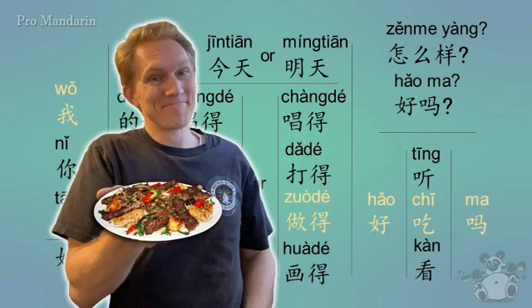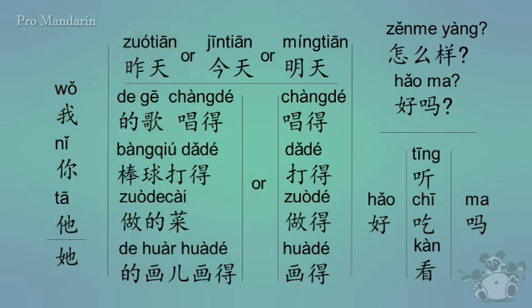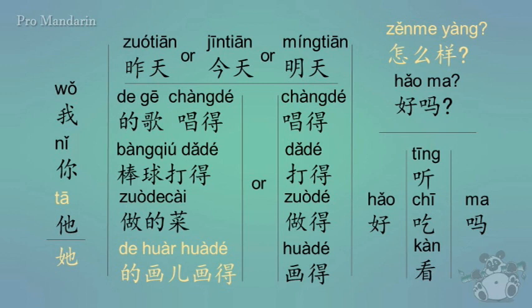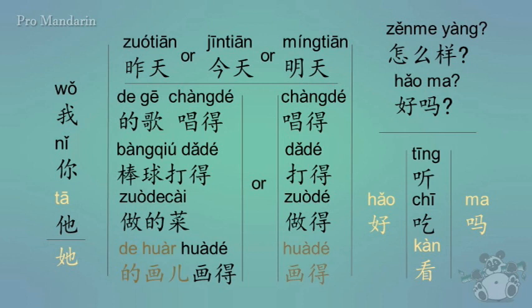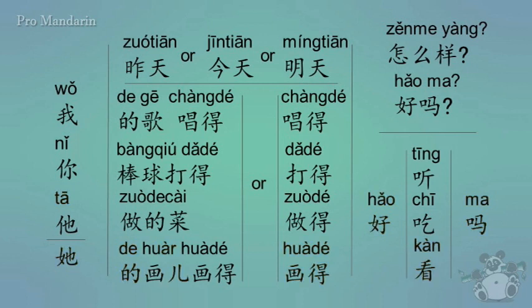How would you say 'how are her paintings' or 'is she a good artist'? Tā de huà huà de zěnme yàng? Another way: tā de huà huà de hǎo kàn ma? Or you could say tā de huà huà hǎo kàn ma — meaning do her paintings look good? Don't get too bogged down wondering which one to use. When you start exploring these methods of speaking, you'll hear a lot of these phrases, and you'll be able to fine-tune your understanding of them naturally.